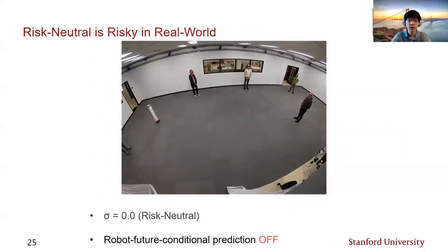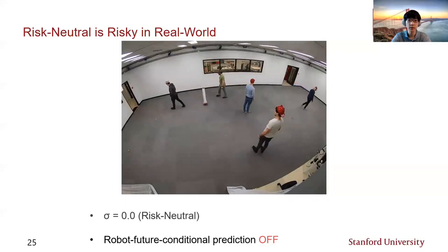Our simulation study was followed by a real-world experiment where we asked five human subjects to walk at their normal speeds to designated goals. The robot's goal was randomized after each episode and not known to humans. We first used the risk-neutral setting and turned the robot future conditional prediction off, so the setup is identical to the first simulation study. As shown in the video, the robot's motion interfered with the human's path and resulted in a collision.